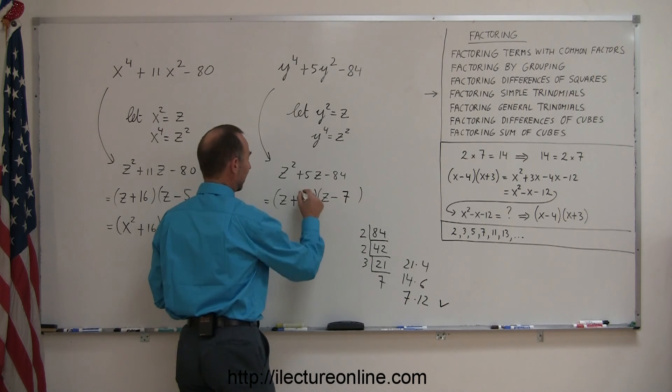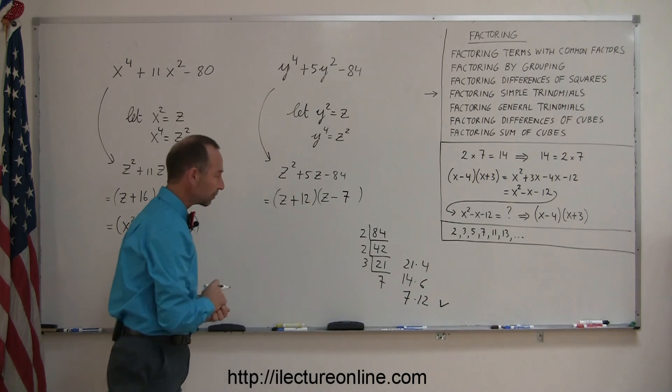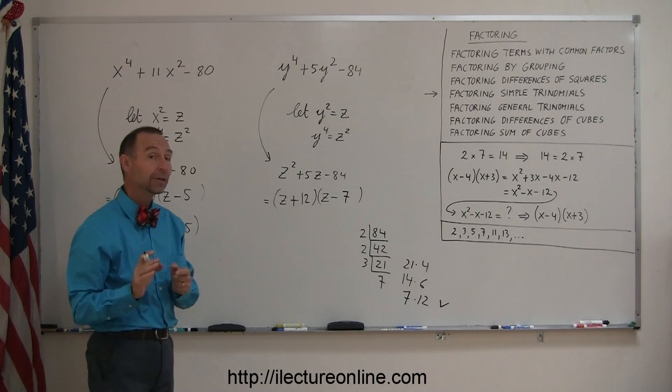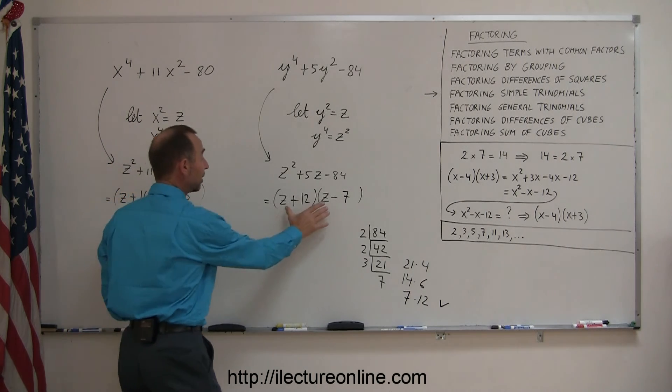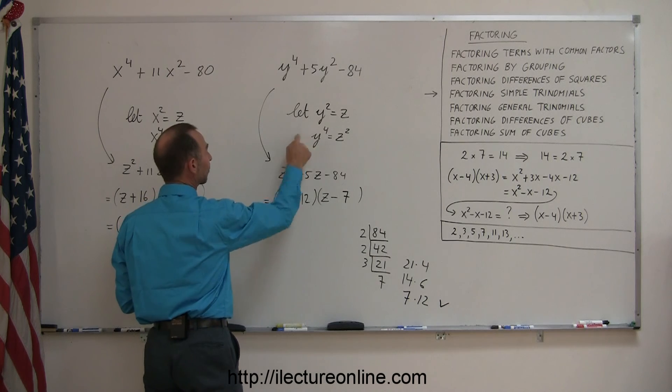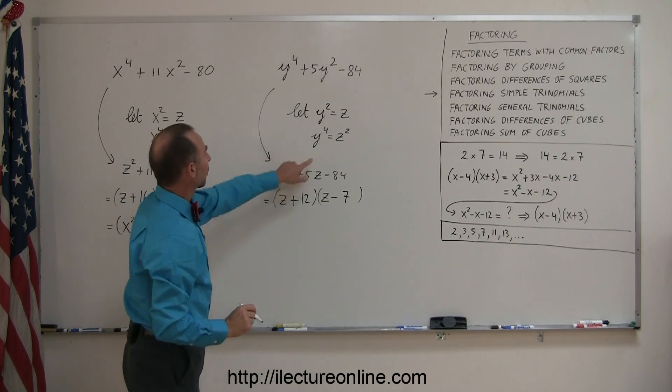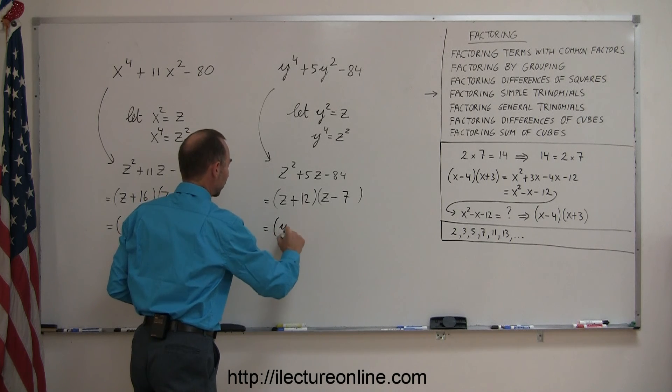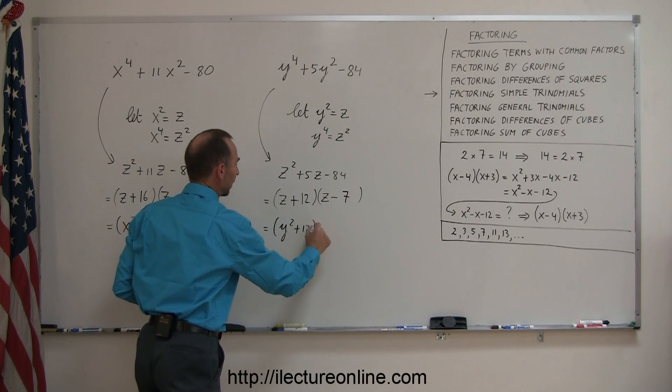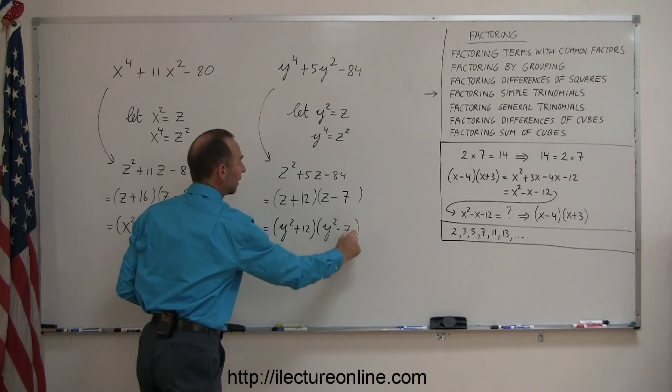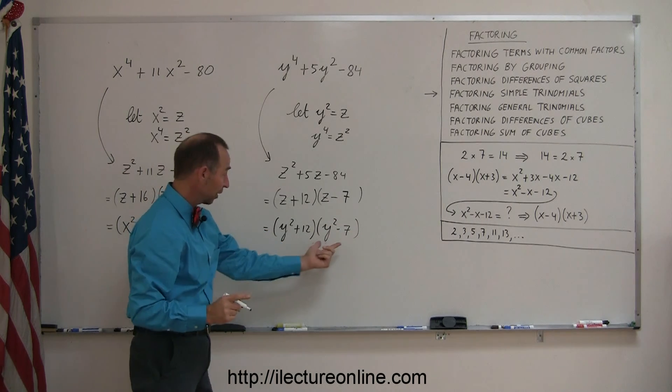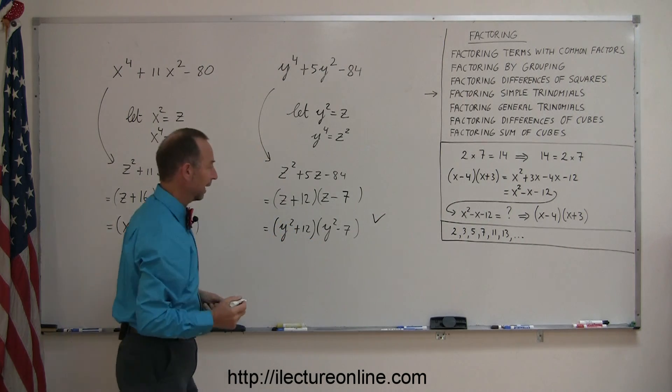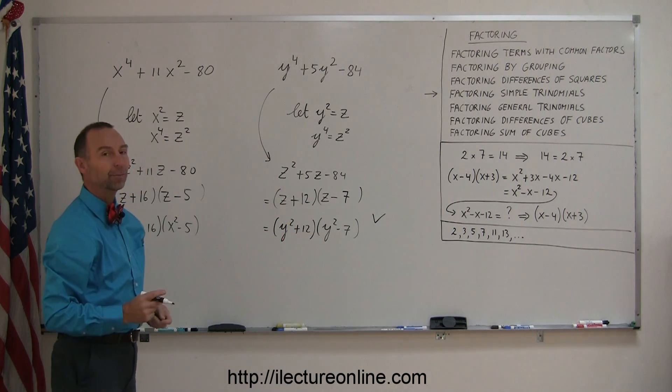That's the factored form of this problem. But we're not done yet, because I used z's here, and I have to convert back to y's. So instead of z, I'm going to write what z is equal to in terms of y, that's y squared. So this is equal to y squared plus 12, and y squared minus 7. A quick check to make sure that this is not the difference of squares, which it's not, so that's my final form, and that's the factored form of my original problem.